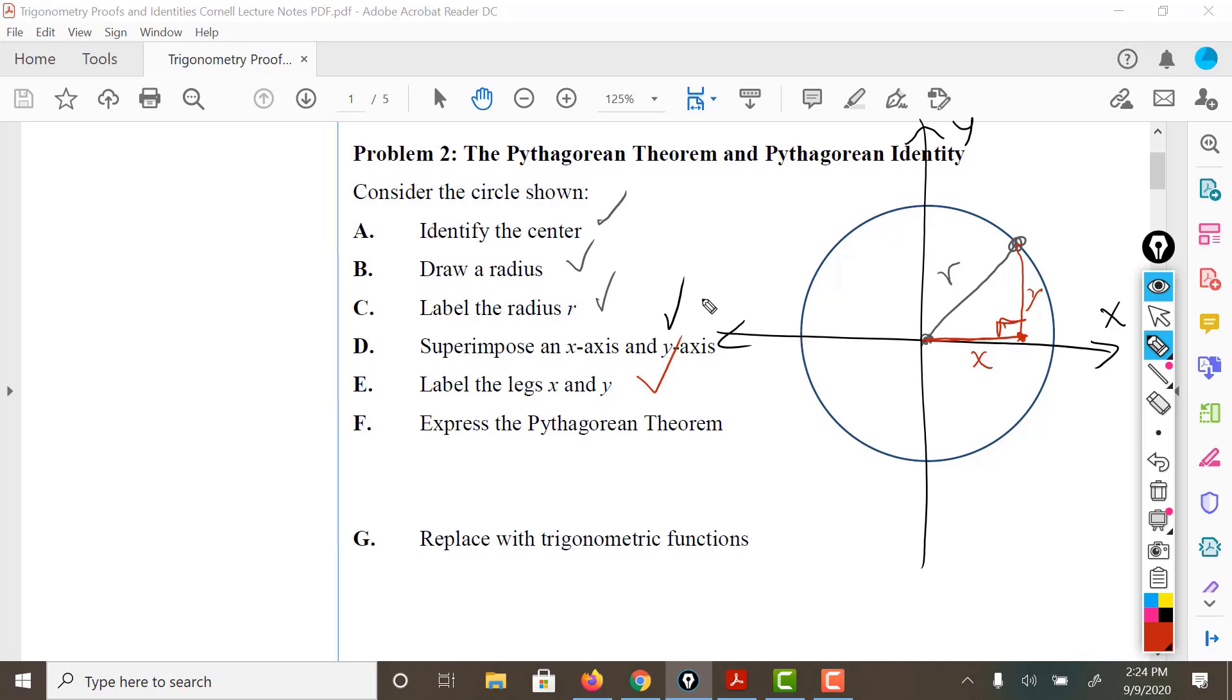Let's write down the Pythagorean theorem. So the Pythagorean theorem for this triangle is going to be not A squared and B squared and C squared. It's going to be X squared, Y squared, R squared. So we have X squared plus Y squared equals R squared.